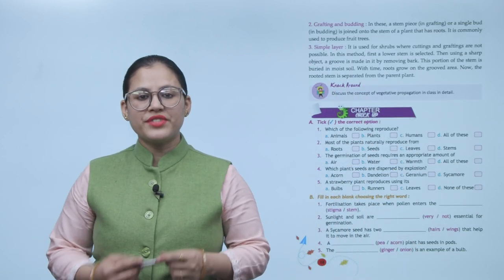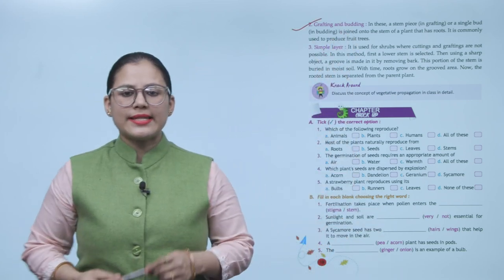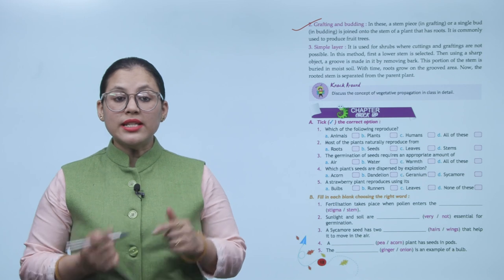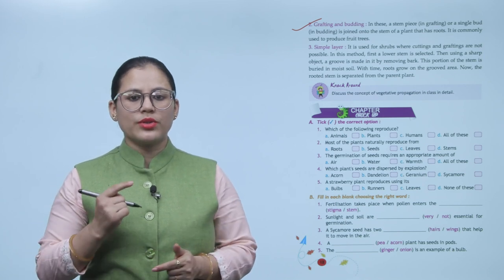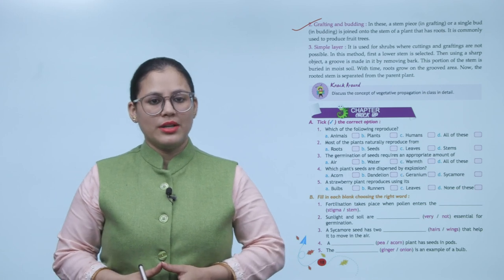Number two: Grafting and budding. In these, a stem piece in grafting or a single bud in budding is joined onto the stem of a plant that has roots. It is commonly used to produce fruit trees.